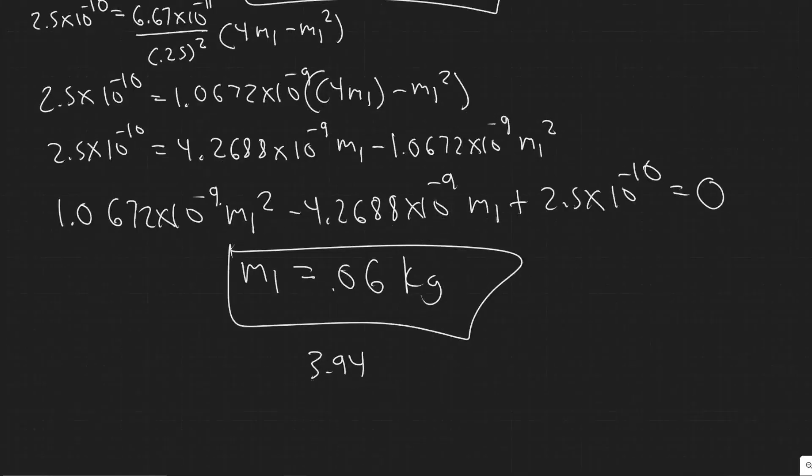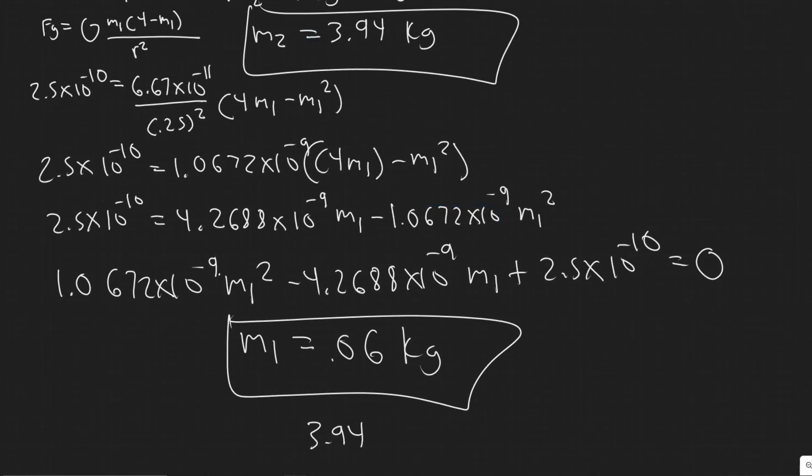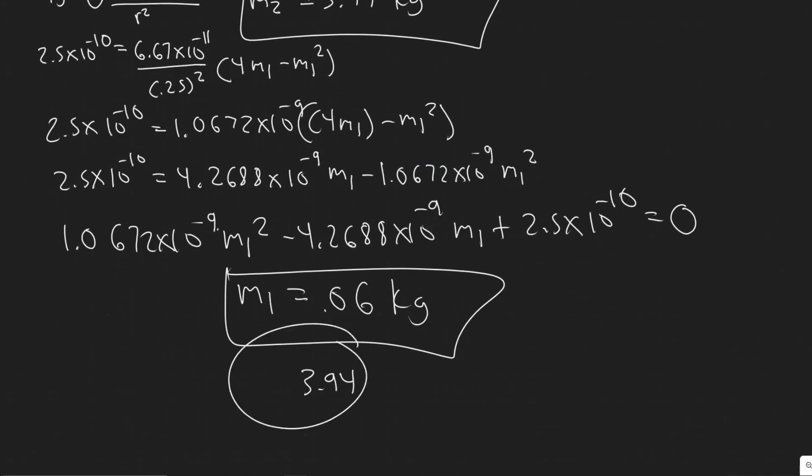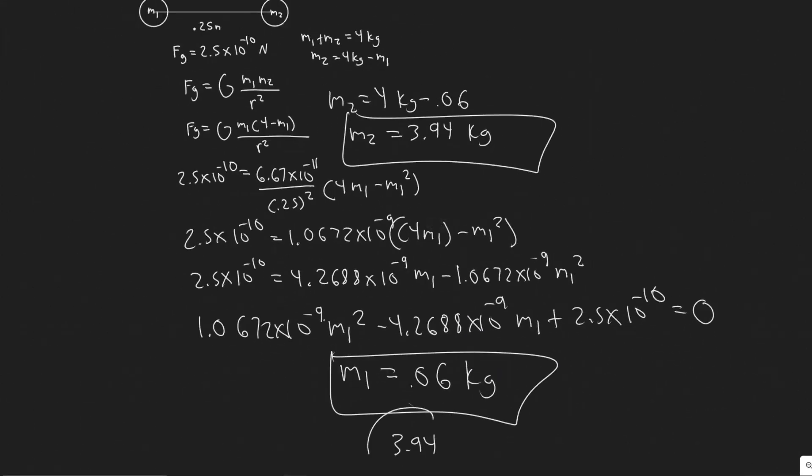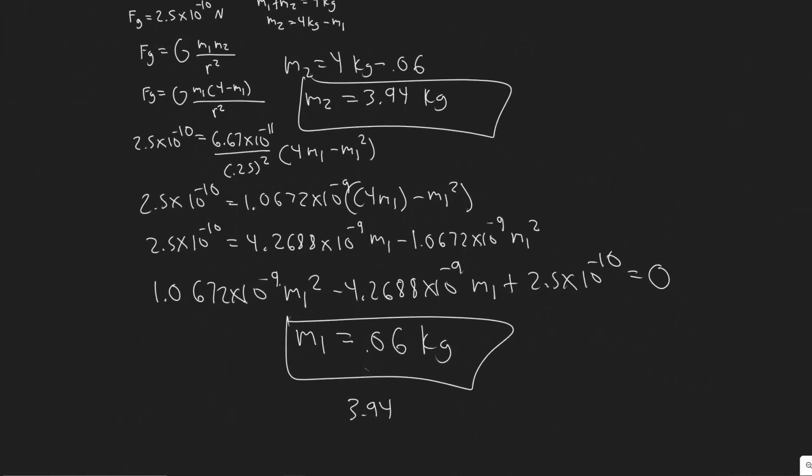Now I just chose the 0.06 and then plugged it in, but just keep in mind that idea, which is you'll get either value because this is quadratic, basically just meaning either mass could be 3.94 or 0.06. We just don't know. And with that, hopefully you found this useful.